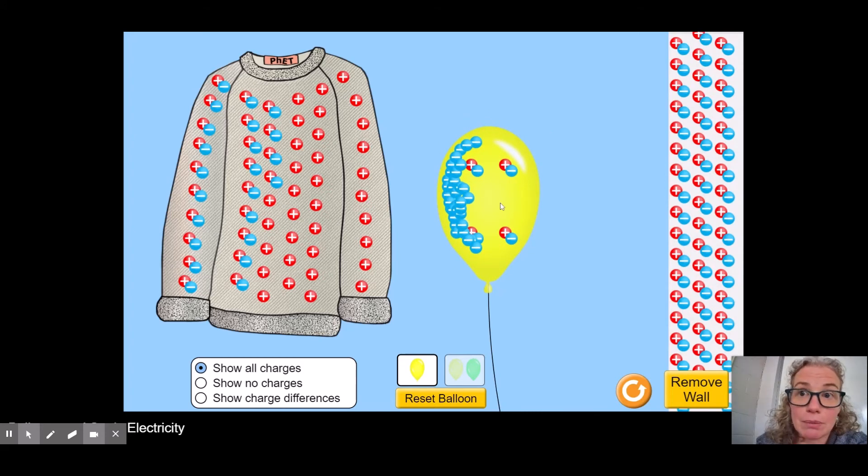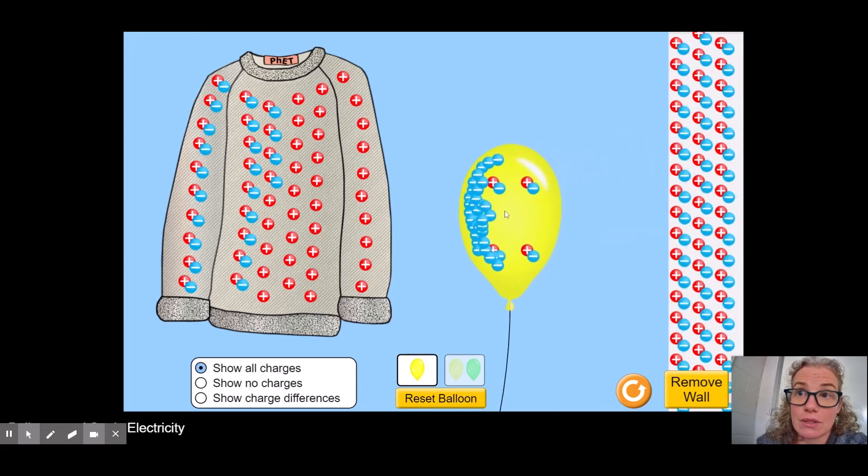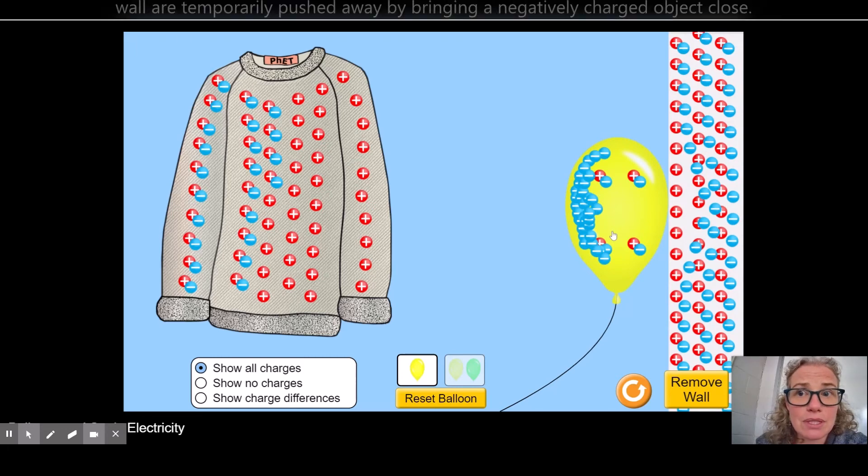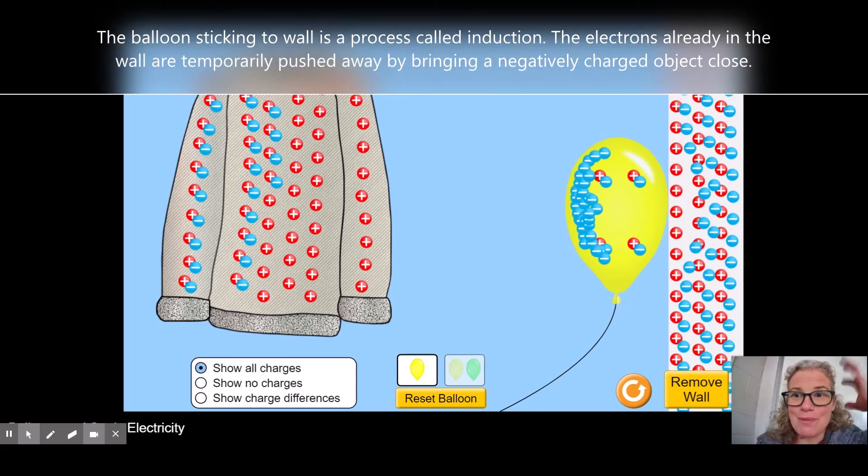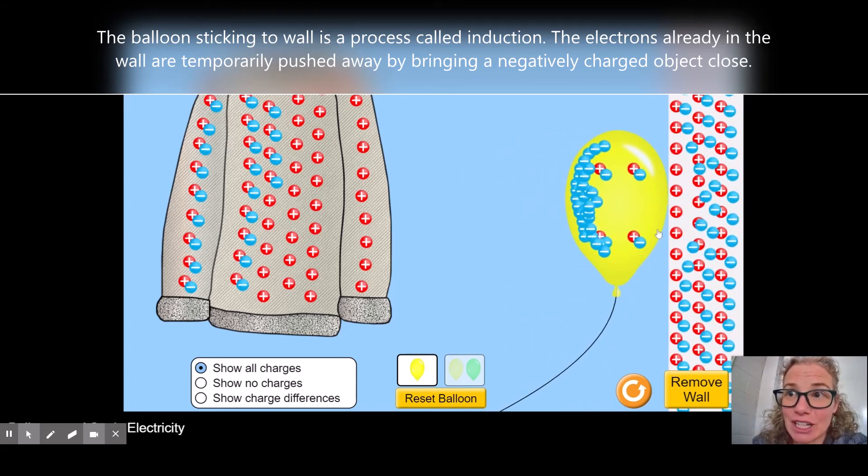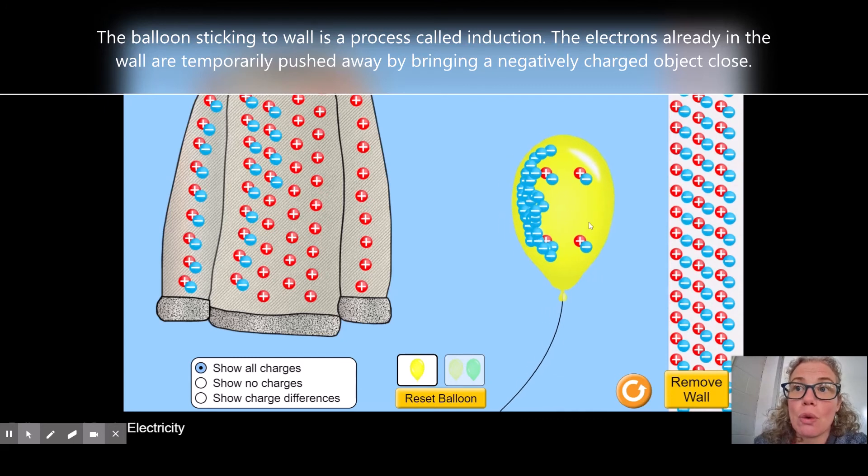Okay, watch what happens when I bring a balloon to the wall. Let me do that again so you can see it. Now, this is why balloons stick to walls after you've rubbed them on your head. You'll notice there's no transfer of electrons, but the electrons that are already in the wall get pushed away.